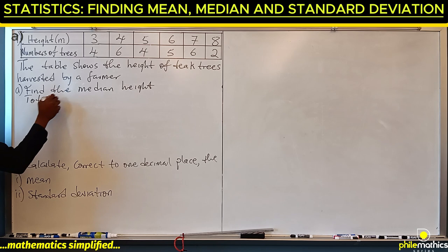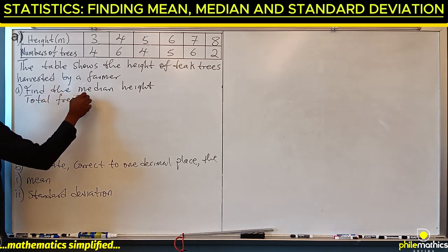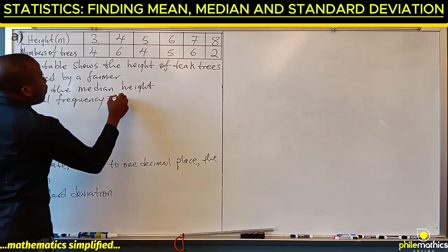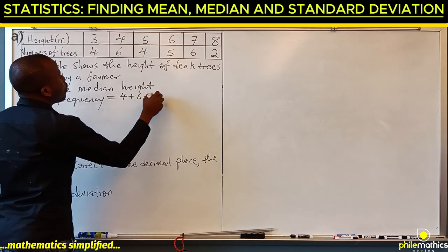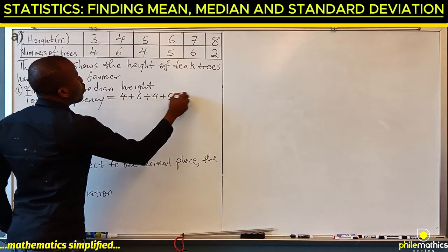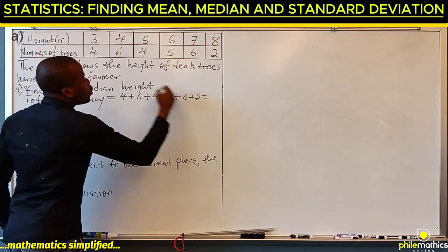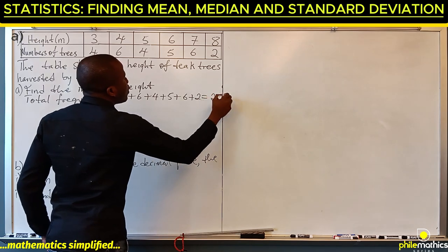The total frequency, which is the total number of trees, is four plus six plus four plus five plus six plus two. Summing these up gives us 27.